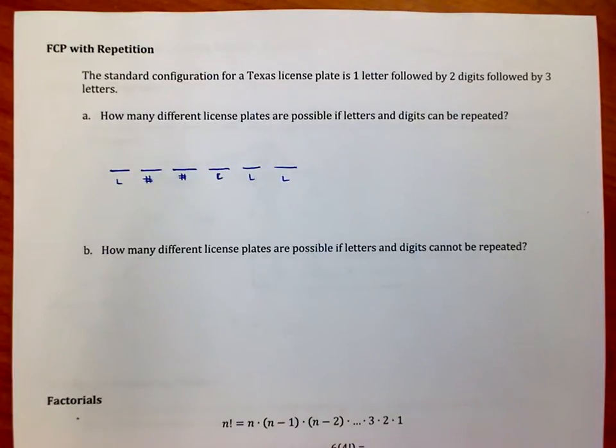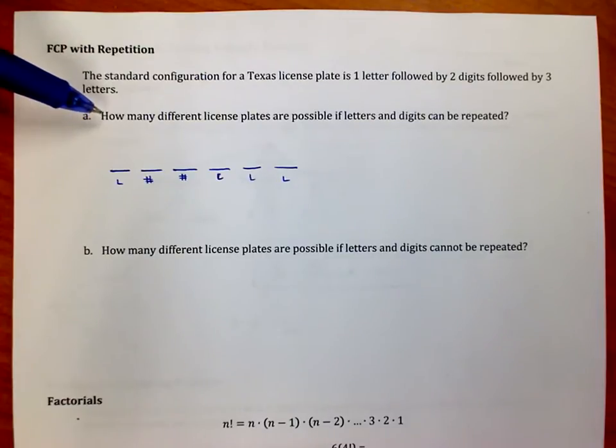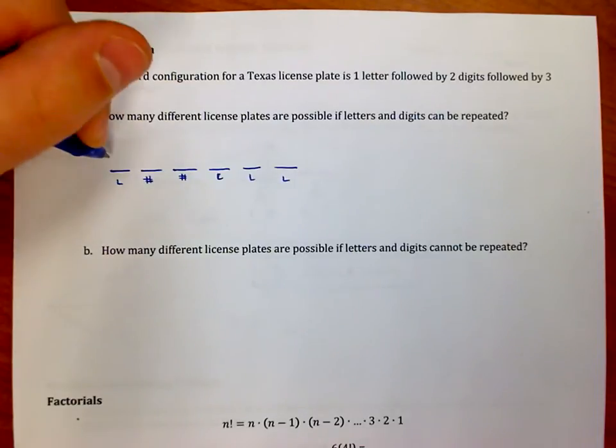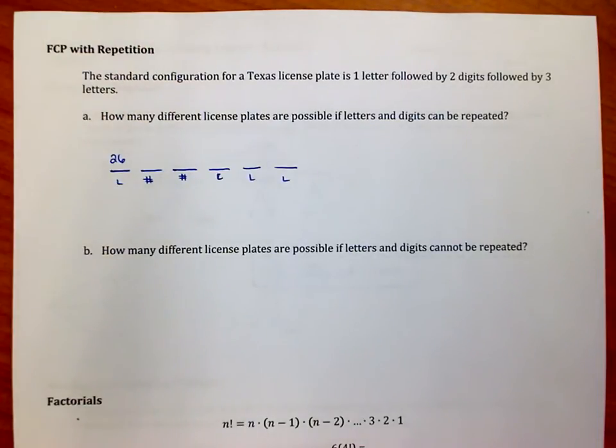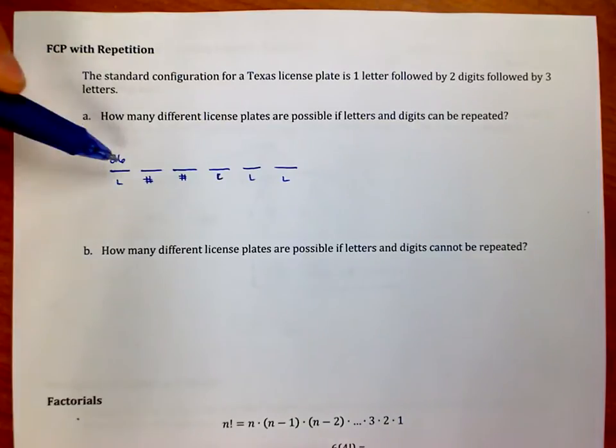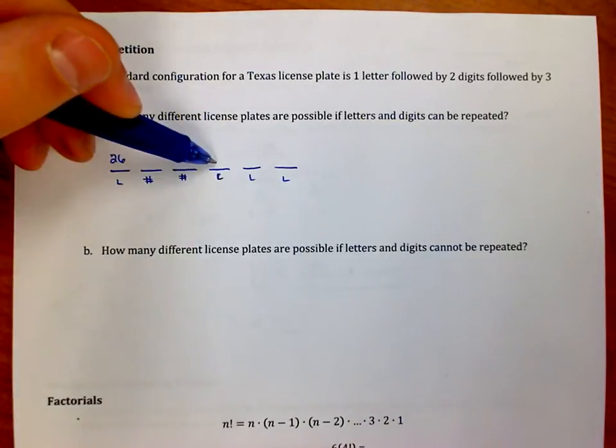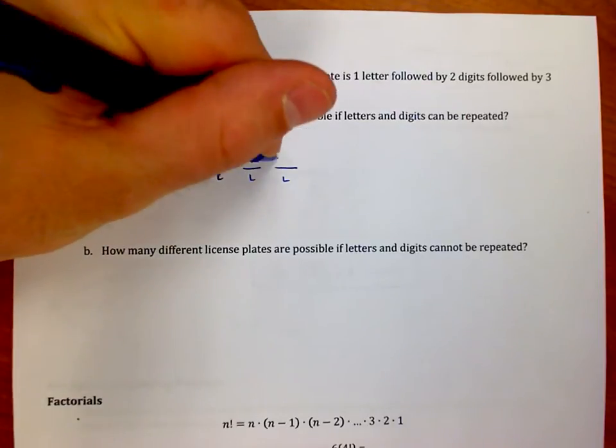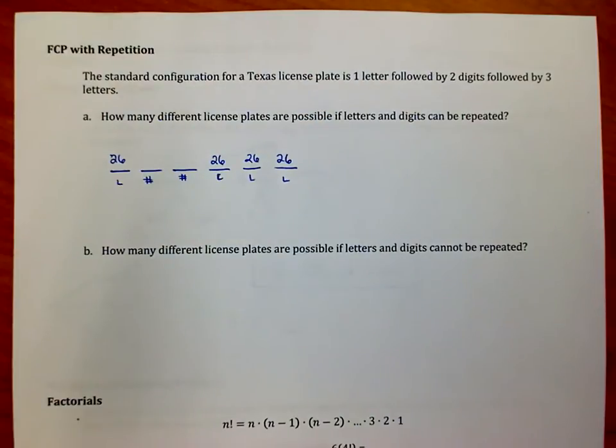Okay, the idea is this. I want to figure out how many different license plates are possible in the state of Texas if letters and digits can be repeated. What I know is for the letters there are 26 letters in our alphabet, so I have 26 choices here. If it doesn't matter that letters can be repeated, so in other words this can be an A and this can also be an A, that means I still have 26 choices here and 26 choices here and 26 choices here.